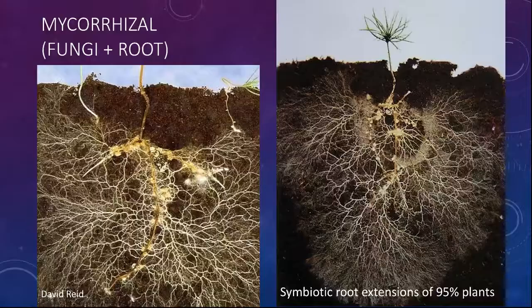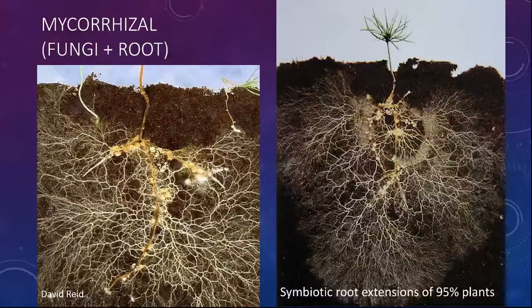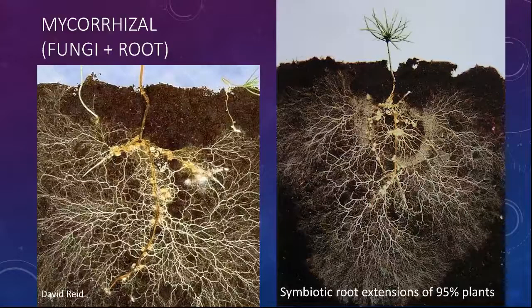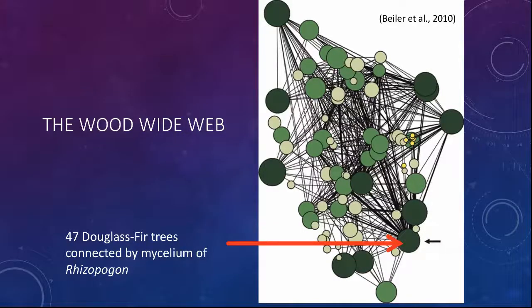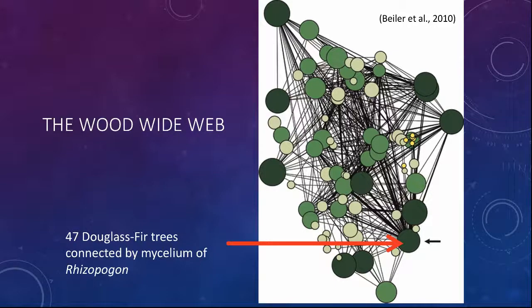Mycorrhizal fungi share nutrients and information between plants. In this image on the left you can see a more mature seedling growing in the middle and tiny baby seedlings connecting into its network — the middle seedling is actually sharing this network with the babies. Scientists call this the wood wide web, where one plant can be associated with many many plants through this symbiotic relationship through many different fungi on their roots. In this case one type of plant has a mother tree connected to 47 other trees of its species with just one type of mycorrhizal fungi.